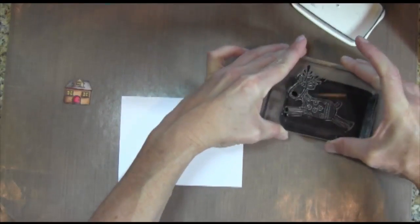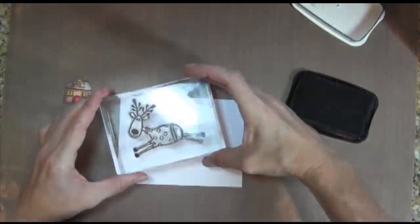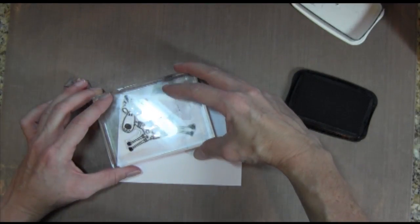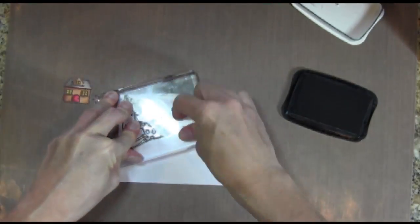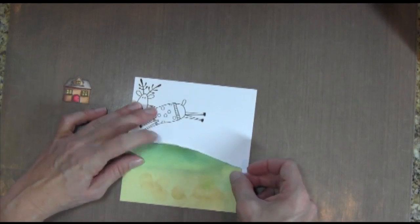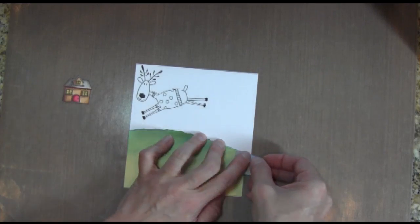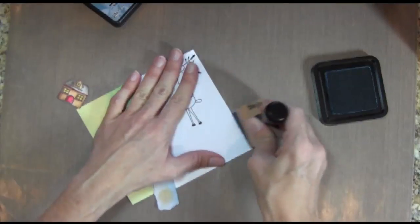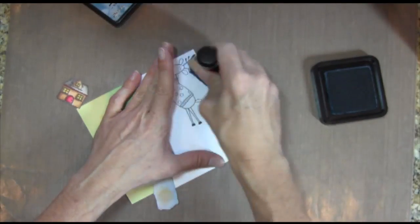And then I'm going to start with my background which uses this cute little reindeer and again I'm using Memento Tuxedo Black ink because it works the best with Copics. At least that's what I found. And then I took a Post-It.